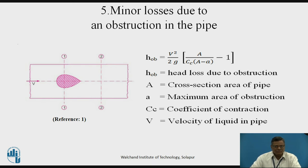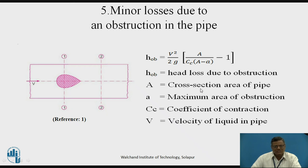Minor loss due to an obstruction in the pipe. Sometimes an obstruction occurs in the pipe flow path — shown hatched in the diagram. Section 1-1 is taken where the cross-sectional area is largest, and section 2-2 is the normal cross-sectional area of the pipe. The head loss due to the obstruction is given by: V²/2g × (A / (Cc × (A − a)) − 1)², where capital A is the cross-sectional area of the pipe, Cc is the coefficient of contraction (since vena contracta forms here too), and small a is the maximum area of the obstruction.